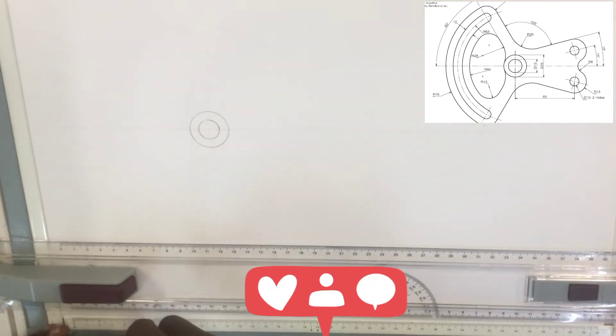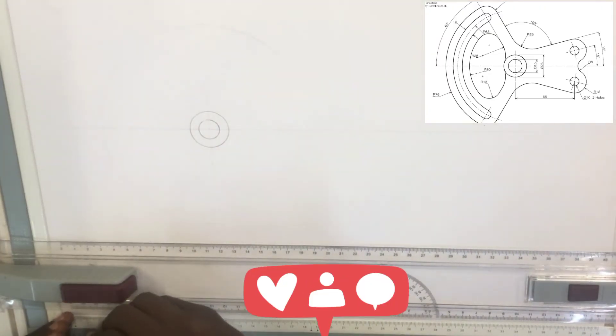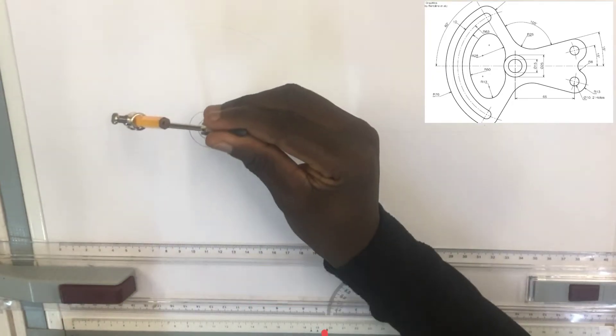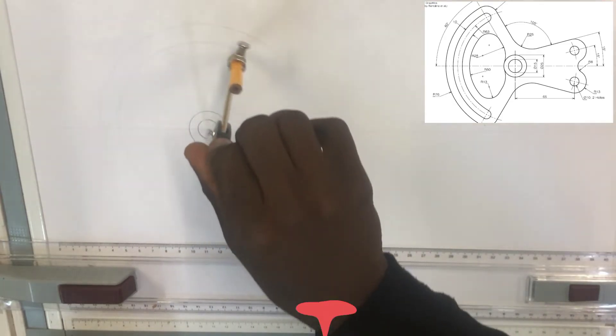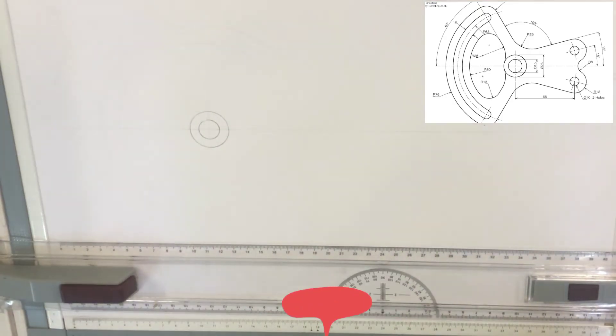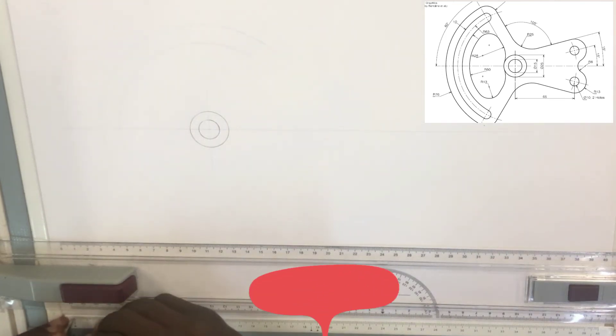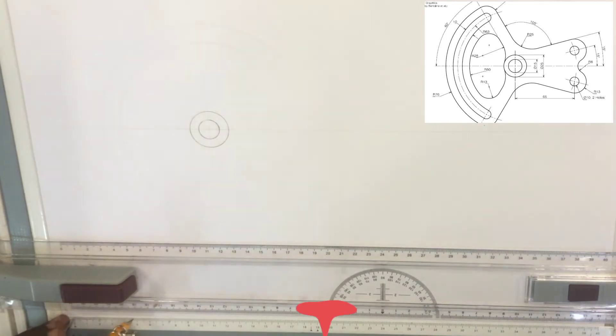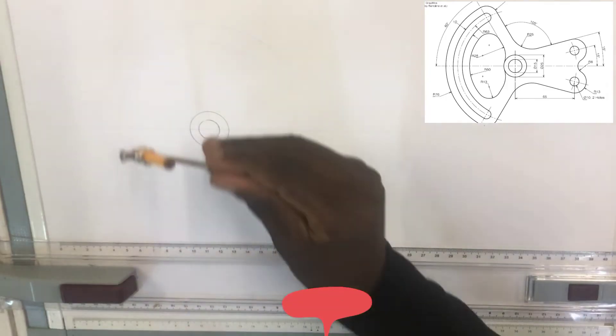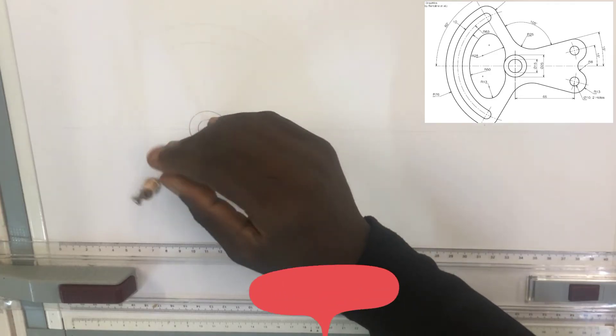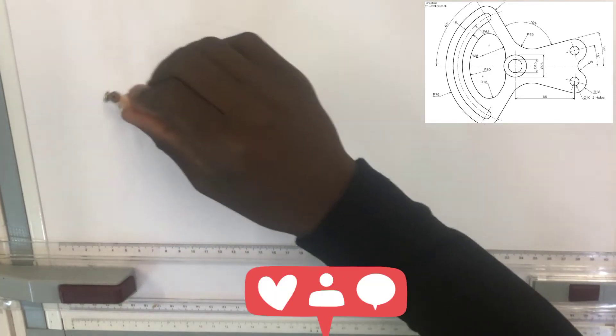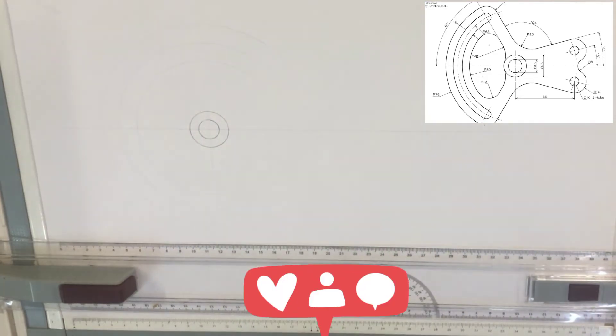Then the second arc, which is of radius 63. Then the third arc, which is of radius 50. Okay, just like this.